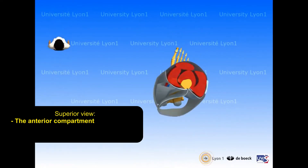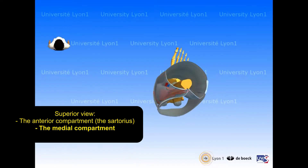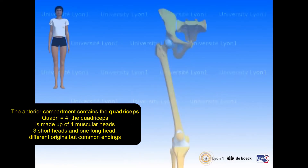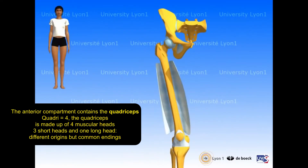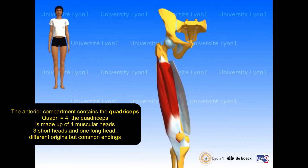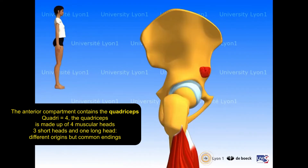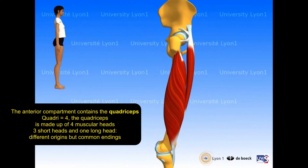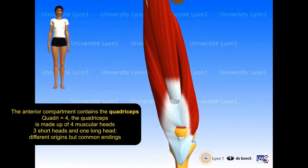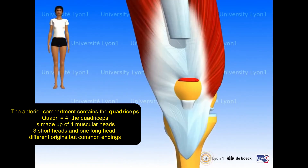The anterior compartment contains the quadriceps. Quadri equals four — the quadriceps is made up of four muscular heads: three short heads and one long head, with different origins but common endings.